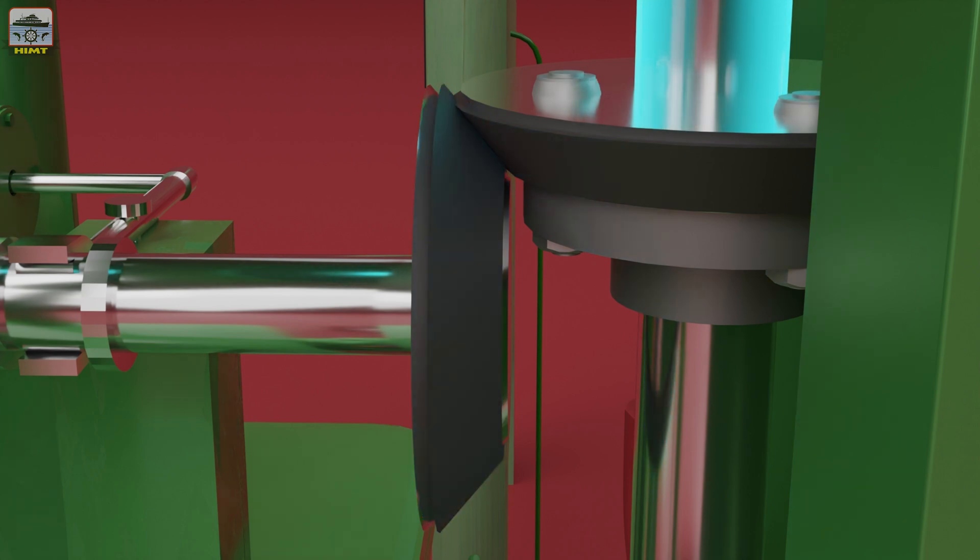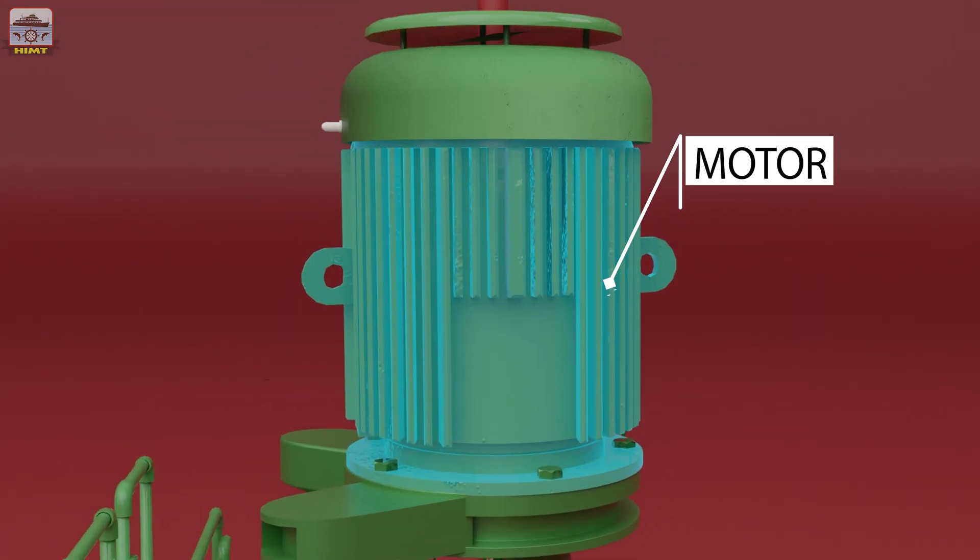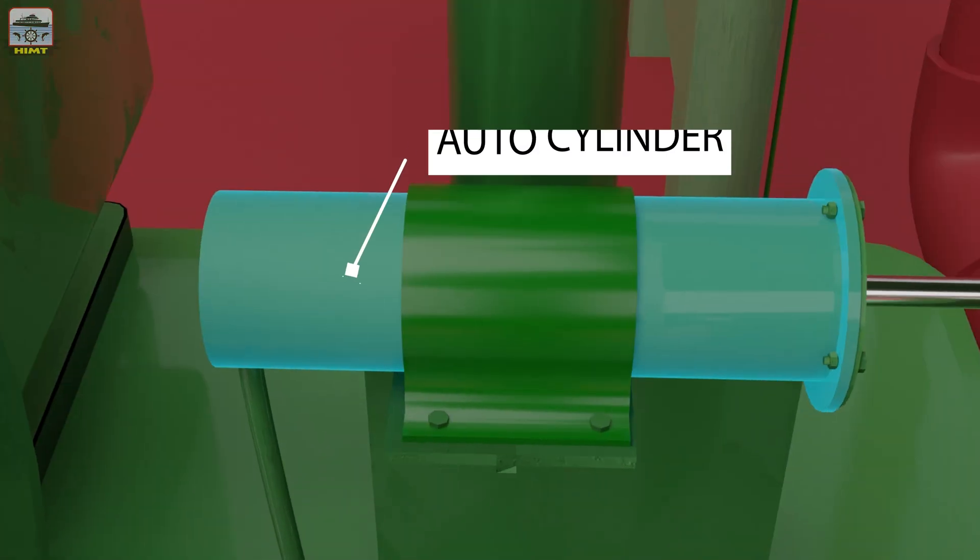This friction pulley can be made to clutch in and clutch out with the driving shaft of the motor by an auto cylinder.